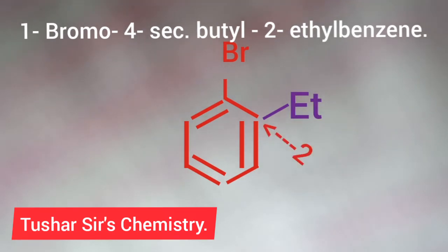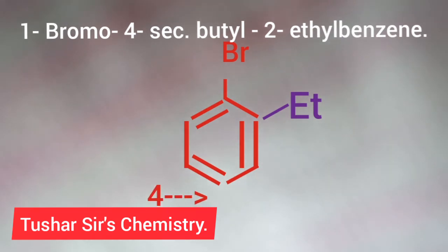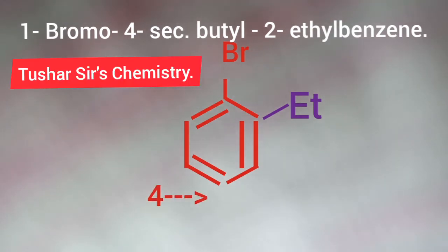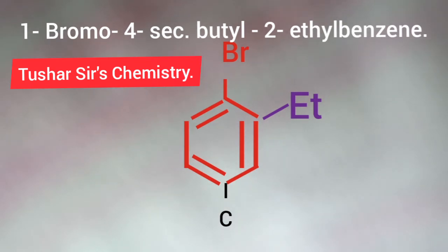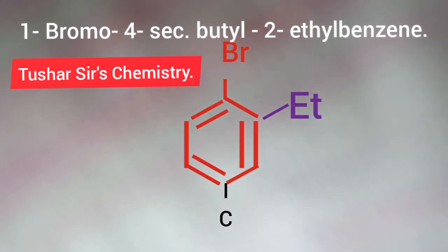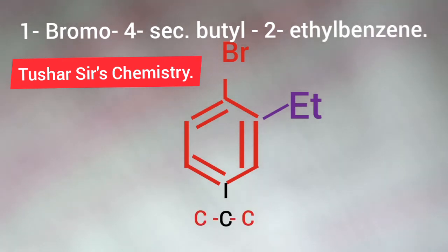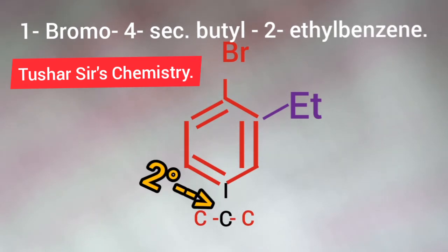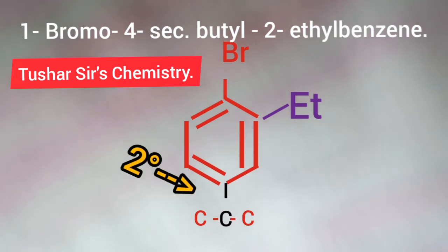Then at the fourth position, Sec-Butyl is there. To write Sec-Butyl, you have to write a carbon first — that carbon should be a secondary carbon. To make it a secondary carbon, two carbon atoms should be written on two different sides of that carbon. Then that carbon becomes a secondary carbon. But the group is Butyl.